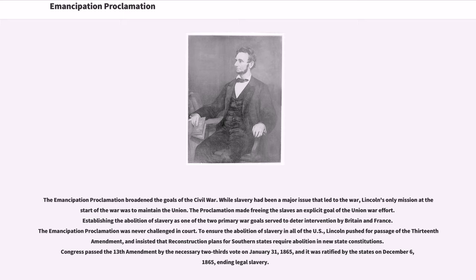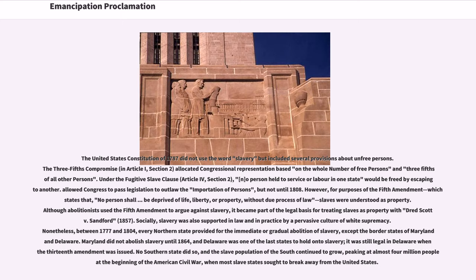Lincoln insisted that Reconstruction plans for Southern states require abolition in new state constitutions. Congress passed the 13th Amendment by the necessary two-thirds vote on January 31, 1865, and it was ratified by the states on December 6, 1865, ending legal slavery.